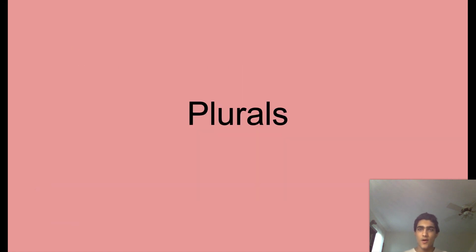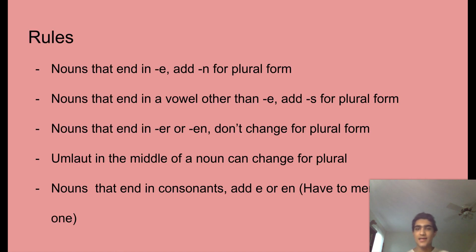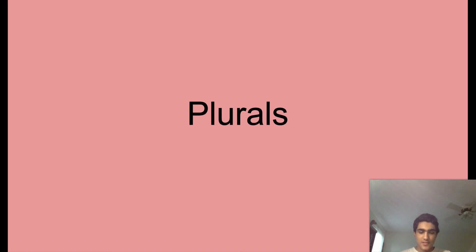Big thing here, big takeaways. Nouns that end in E add N. Other vowels than E add S. Ends in E-R or E-N, you're not changing it. Umlauts in the middle can change. And if they end in consonants, it's either E or E-N or possibly other exceptions. But you really have to memorize this. What you take away from this is you got to do a lot of memorization. Know your rules, be comfortable with your rules, but know that your rules don't apply to everything. That's why you have to do some memorization. And this is one of the more trickier parts of German, but you'll be fine.